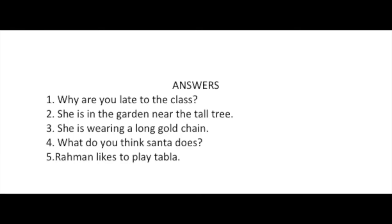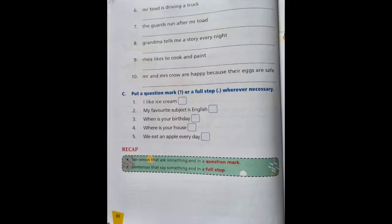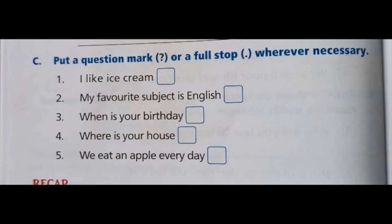Now you have the answers on the screen — check them. Turn to the next page, page number 10. In the similar way, you have five more questions. The sentences are given; you will do it yourself. The answers I will give you in the PDF. Now Section C. Let's read the question: 'Put a question mark or a full stop wherever necessary.' So we have to put a question mark or a full stop at the end after reading each sentence.